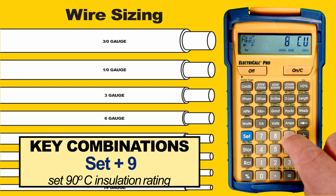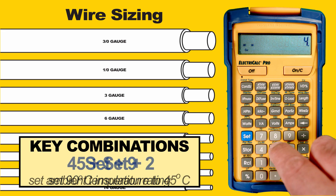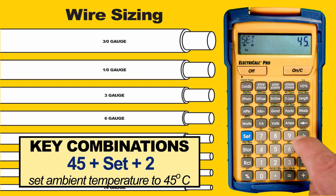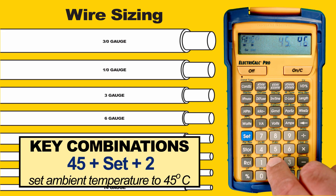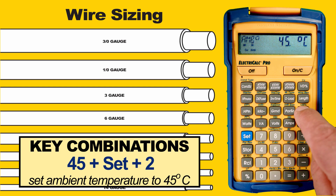To change the ambient temperature, use the keypad to enter the value. We're going to use 45°C, then press Set then 2, which has a second function of Ambient Temperature. Press Wire Size again to see the new value.